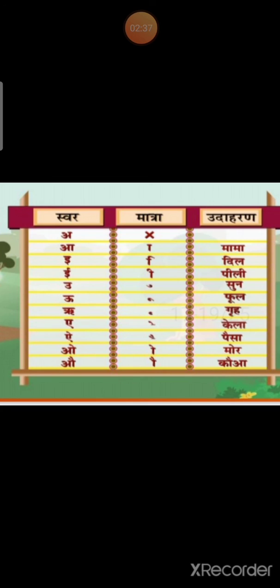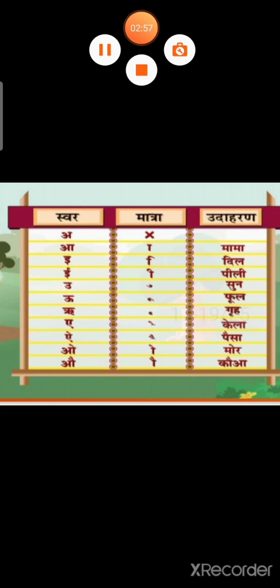So not only Ka, we can take any other letter — Vyajanakshar — any other: Ma, La, Sa, like that, any letter we can take. Then R — R ki Matra. Next is A — A ki Matra — one line, then up of that line, Matra is there. Next is I — I ki Matra.